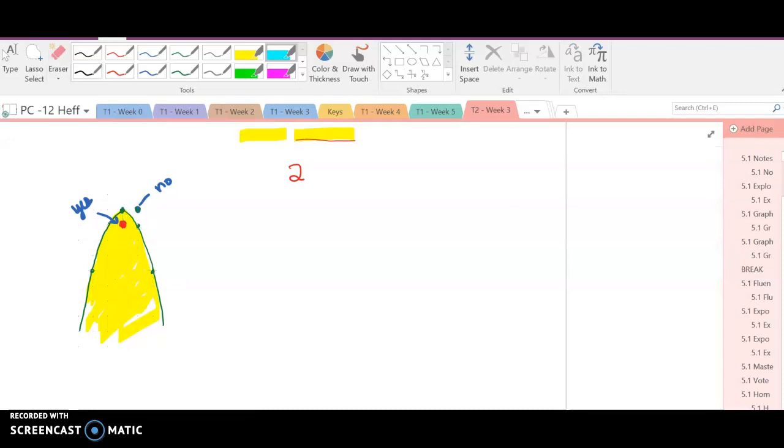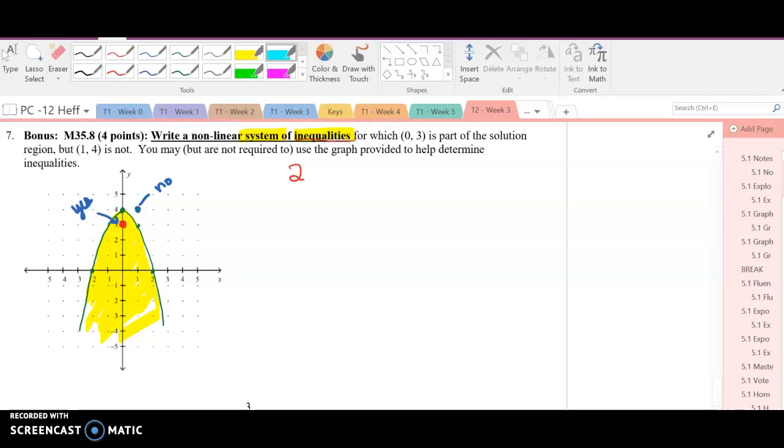So instead I'll have it be here, the center here and a radius of 2, over 2, over 2 up, 2 down 2, and we'll shade inside. And so notice the green area is the area we want and it includes (0, 3) and does not include (1, 4). Now I just have to come up with the system.